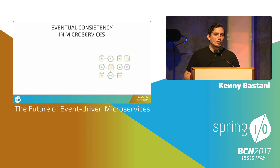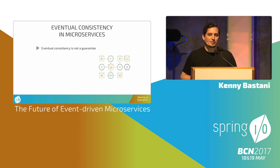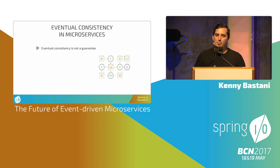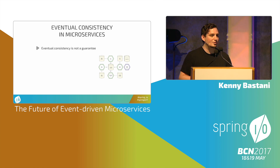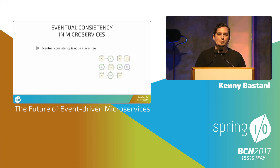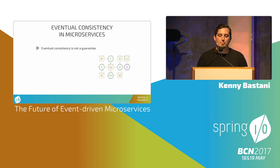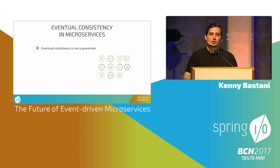We have to take on new competencies with this model — we have to embrace eventual consistency. But eventual consistency is not a guarantee. There's a myth that you get eventual consistency out of the box with microservices — not entirely true. The system can get into an inconsistent state that you can't roll back from. Eventual consistency is the best we can achieve, but we still have to do work to get there.